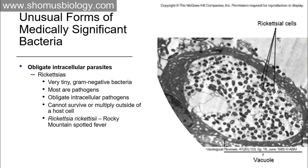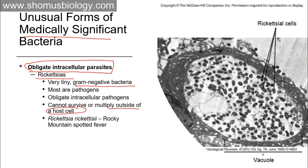Regarding the medical significance of these unusual forms of bacteria: one key example is Rickettsia. Rickettsia are obligate intracellular parasites — just like viruses. They are very tiny, gram-negative bacteria, and most — in fact all — are obligate intracellular pathogens. They cannot survive or multiply outside of a host, behaving like a virus in that respect.